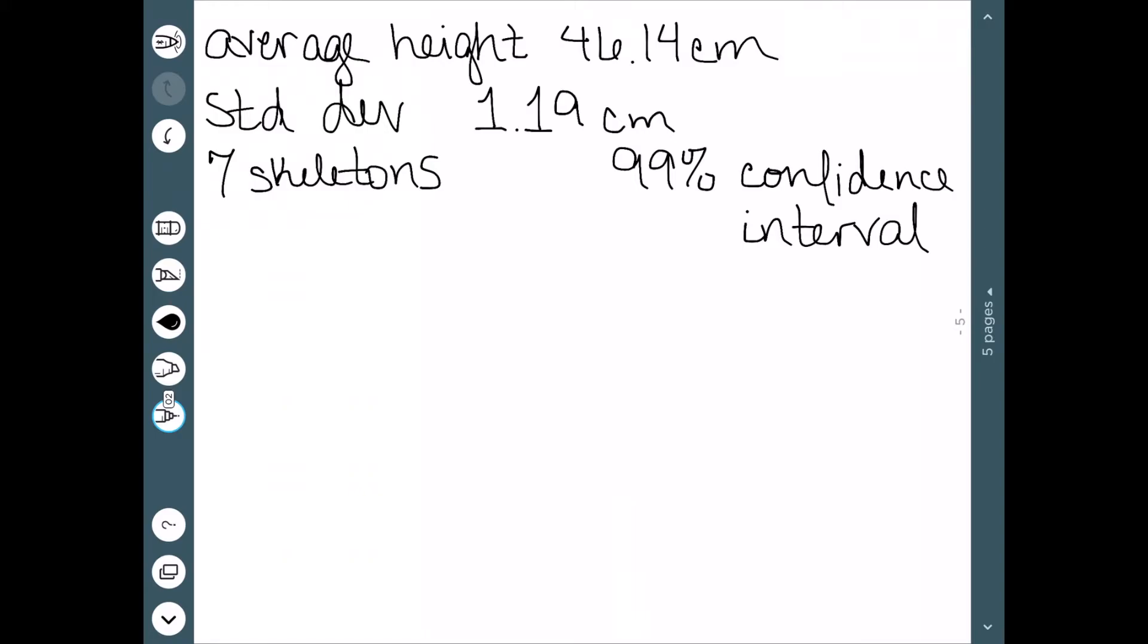And let's suppose we want to do a 99% confidence interval. So I didn't write down the whole problem, but I wrote down all of the key points here. We know what the average height is. We know what the sample standard deviation is. We have our sample size. And we know our confidence level. The first thing we want to find is the margin of error. This value of t times s over root n. So remember, the t value comes from our t-table. So let's look it up. We know we have a 99% confidence interval. And we know our sample size is 7, which means our degrees of freedom is 6.